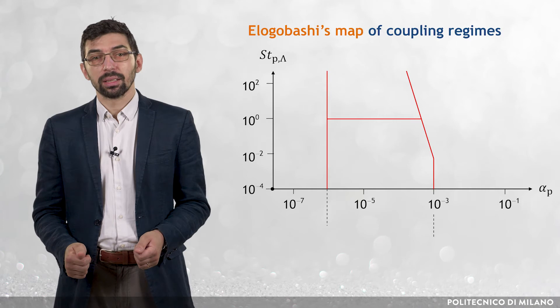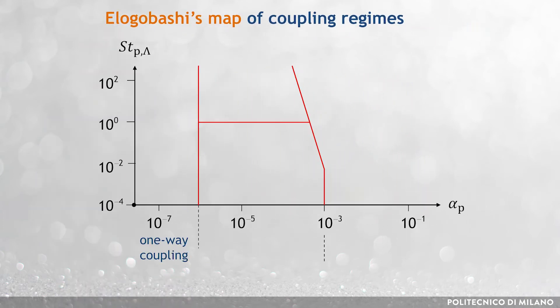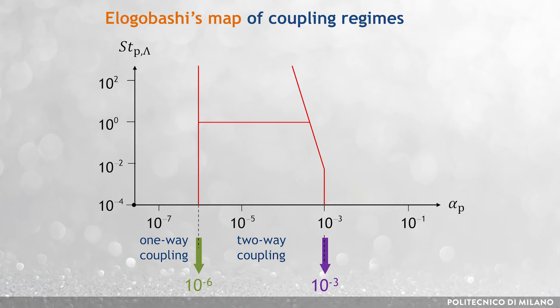Let's come back to the case of dispersed flows, in which the particles can be treated as individual entities and their motion is mainly dominated by the effect of the fluid. According to the well-known El-Gobashi's map, threshold values of particle volume fraction define the boundaries between the different flow regimes. One-way coupling occurs for solid-volume fraction lower than 10⁻⁶. Two-way coupling takes place for solid-volume fraction between 10⁻⁶ and 10⁻³. Four-way coupling is associated to solid-volume fraction above 10⁻³.